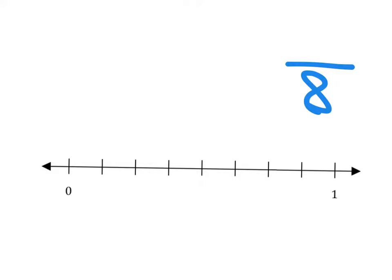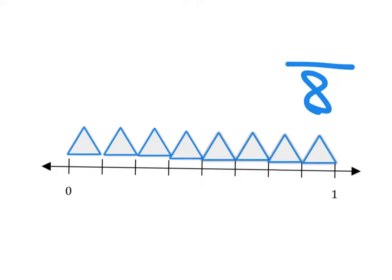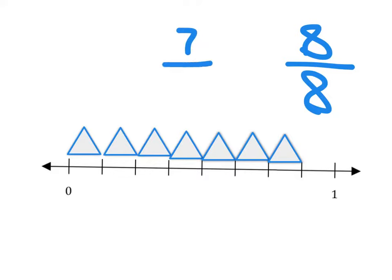Let's say we have eight triangles. When we have all eight triangles, we have one full set of triangles — we have eight out of eight, which means we have the full collection, we have a whole. But what if I took one away? We had eight, I take one away, we count back from eight by one, we have seven. So now we would write that as seven out of how many spaces to have a whole — eight. Seven out of eight.